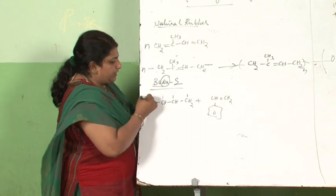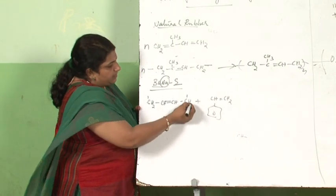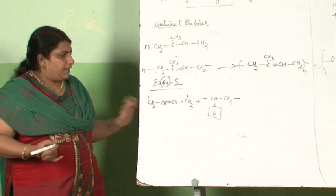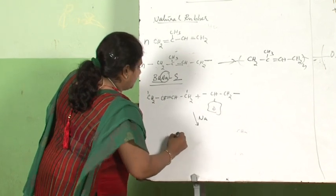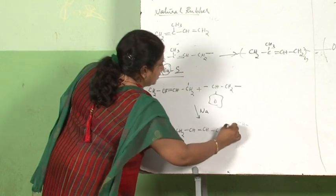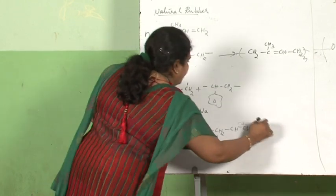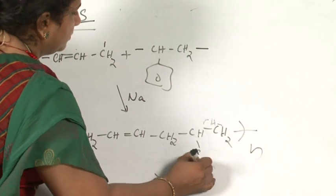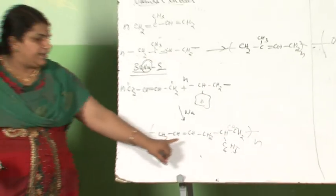Free valencies are created on all the carbons involved. The carbons combine: a new double bond forms in the middle of the butadiene unit, and the styrene carbon links at the end. This takes place in the presence of sodium, giving the repeating unit: CH2-CH=CH-CH2-CH(C6H5)-CH2, written N times.